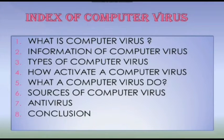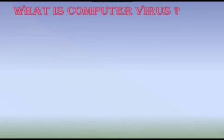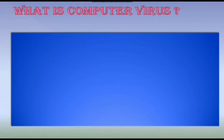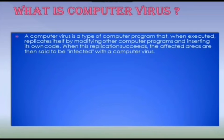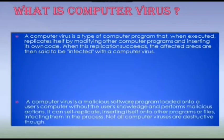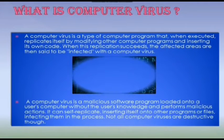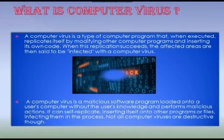We will also cover how a computer virus activates, what a computer virus does, what are the sources of computer virus, antivirus, and then the conclusion. A computer virus is a type of computer program that, when executed, replicates itself by modifying other computer programs and inserting its own code.